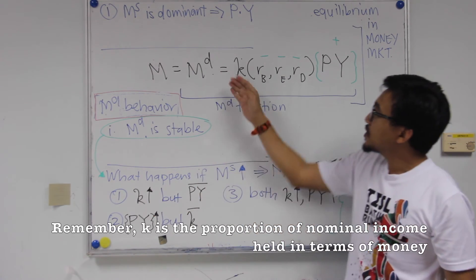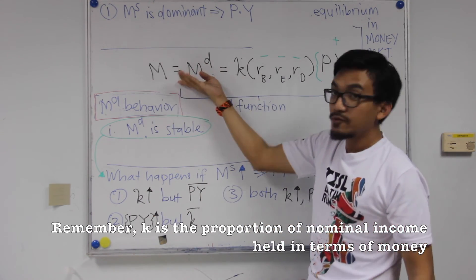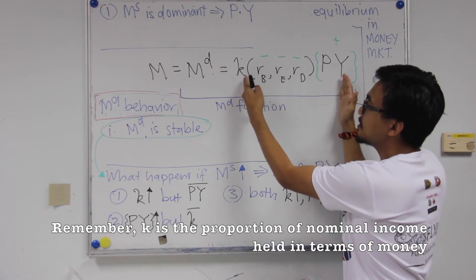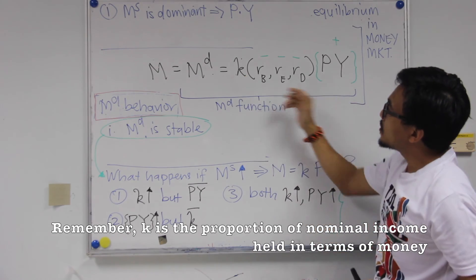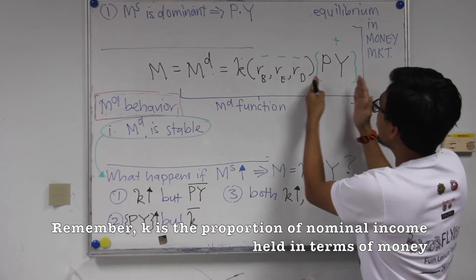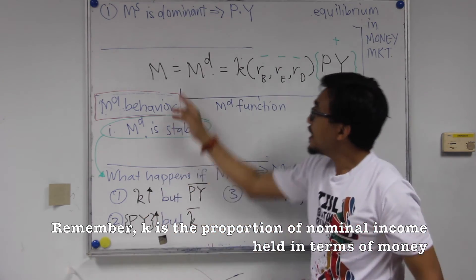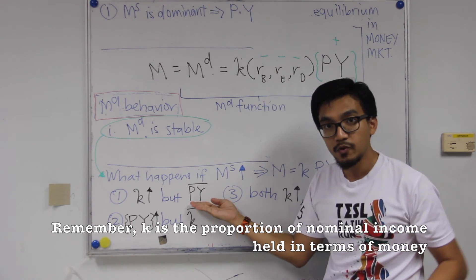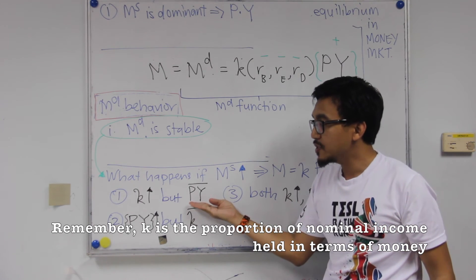So what will happen in the money market? Because now we know that there is a disturbance to the equilibrium. So there are actually three possible situations that may arise. The first situation, whenever M goes up, for the equilibrium to hold, the right hand side must change. This thing must change. Since we have two variables here, the K and the PY. So if M goes up, so we can have K goes up, but nominal income remains the same. No changes. So this is the first situation.